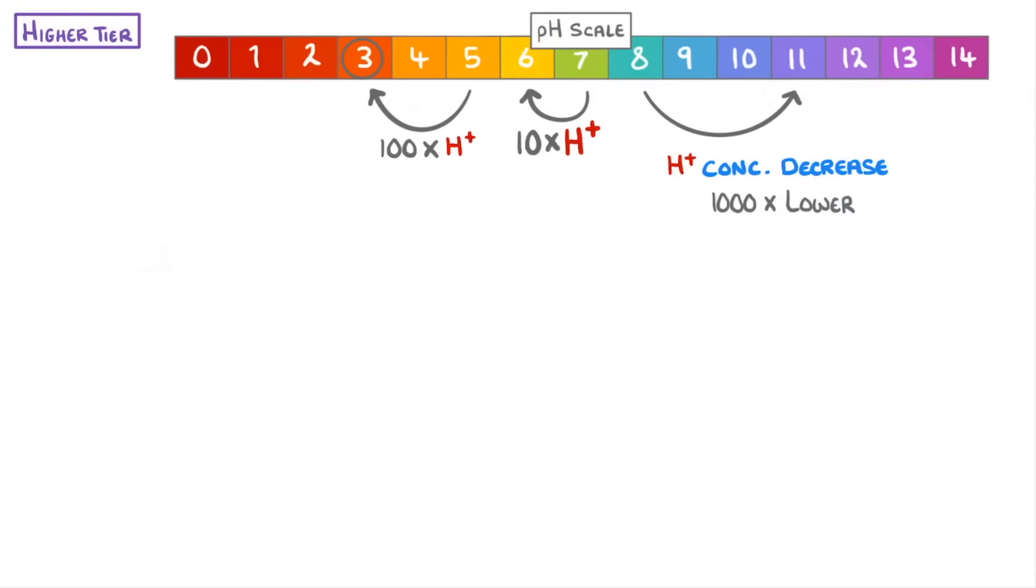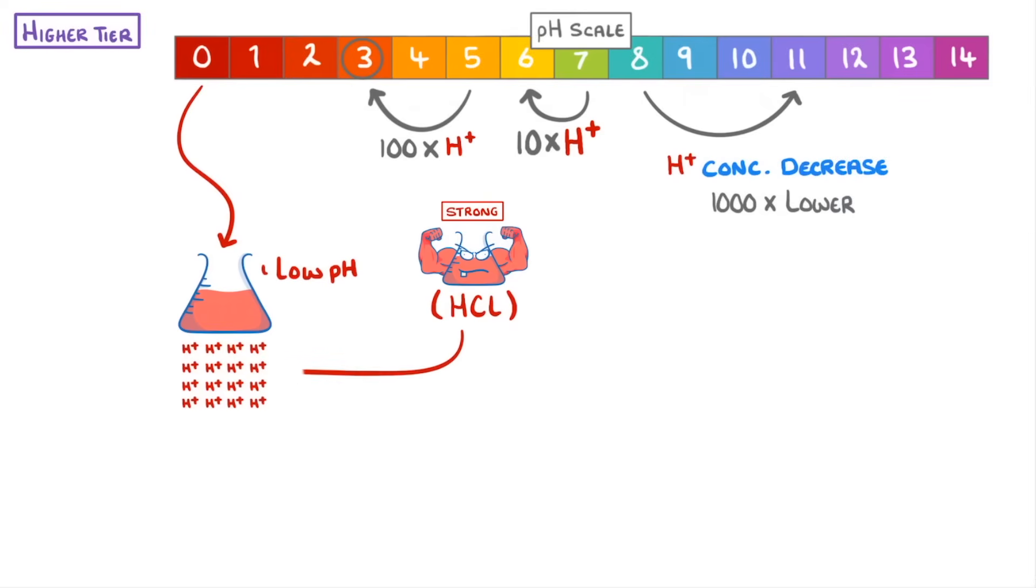So putting all of this together, to get a very acidic solution that has a low pH, we'd need a high concentration of hydrogen ions. If we had a strong acid, like hydrochloric acid, we could achieve this low pH at most concentrations, because each particle dissociates fully, and so overall we'd have loads of hydrogen ions being released.